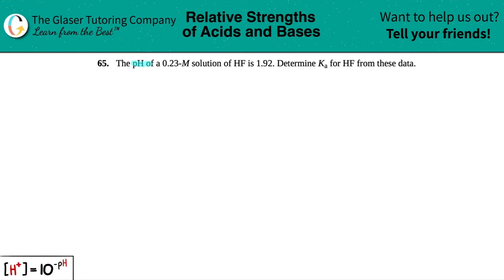Number 65. The pH of a 0.23 molarity solution of HF is 1.92. Determine the Ka for HF from these data.